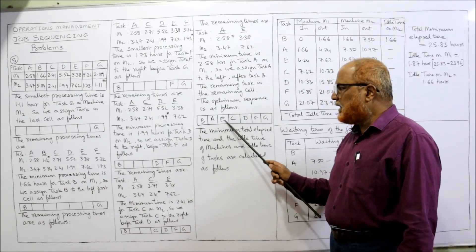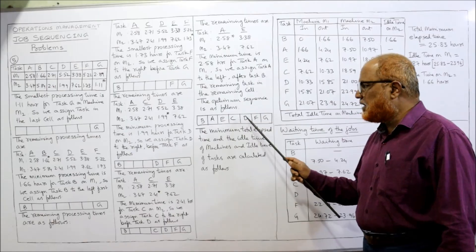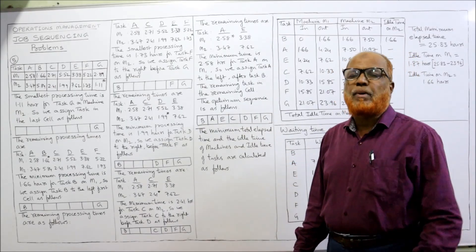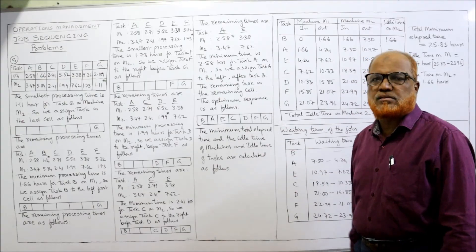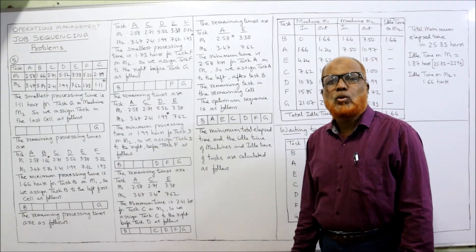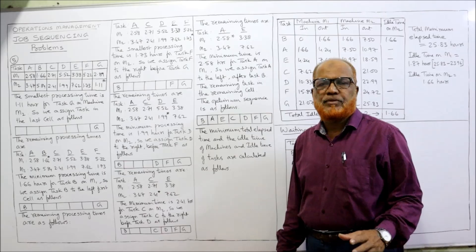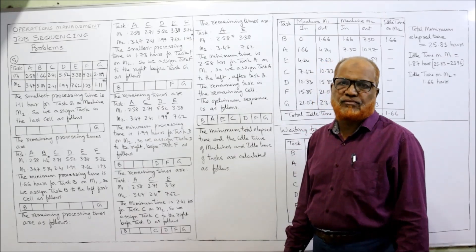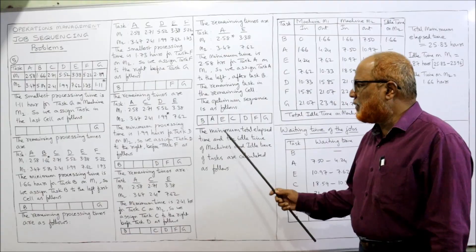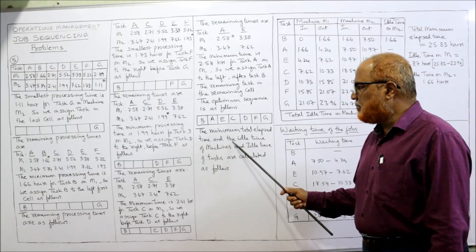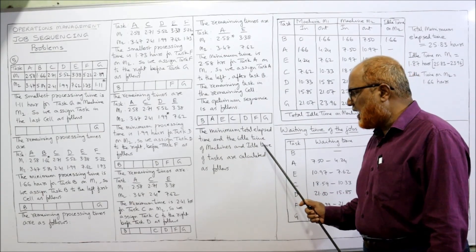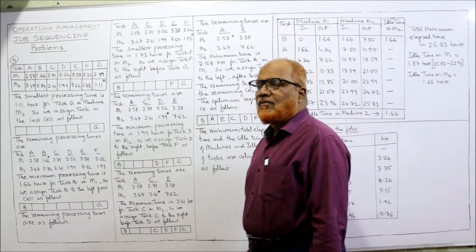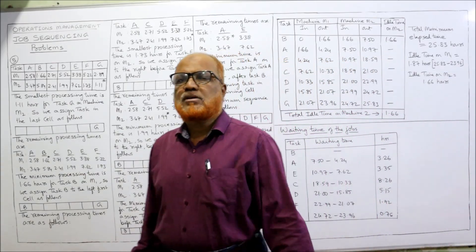Ultimately, the optimum sequence for completing all jobs is: B, A, E, C, D, F, G. If we follow this sequence, the total elapsed time will be minimum — that is our objective. Now we calculate the total elapsed time, idle time of machines, and idle time of tasks.